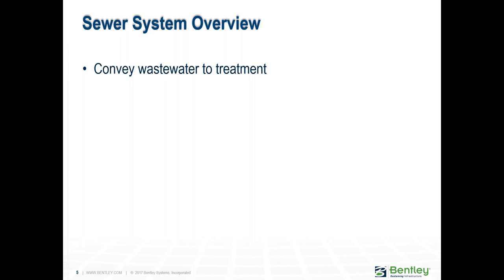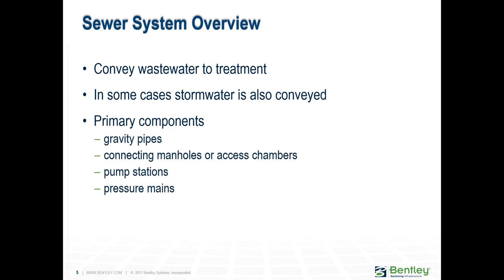When I refer to a sewer system, I'm talking about the pipes, manholes, and other elements that convey all wastewater to a treatment plant. Sometimes stormwater is also conveyed. The primary components are gravity pipes, manholes or access chambers, pump stations, and pressure mains. We design for gravity flow because it doesn't cost anything — anytime we pump, it's additional cost and maintenance.